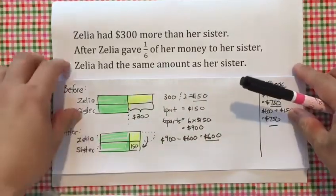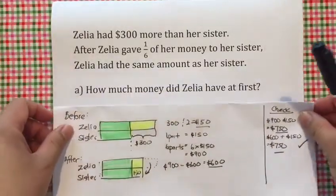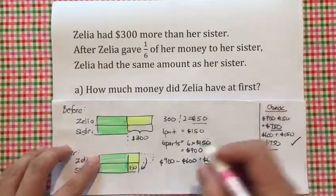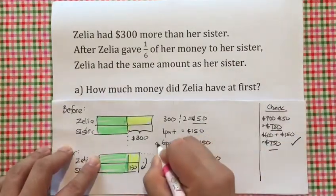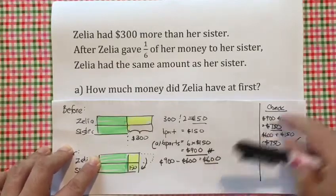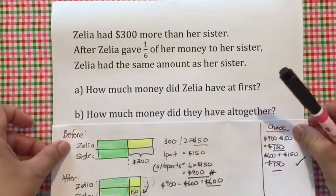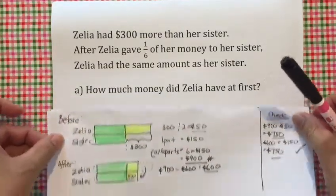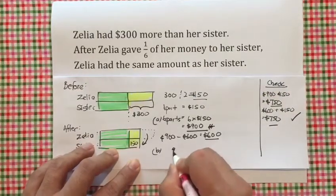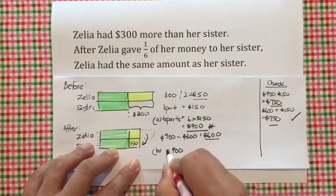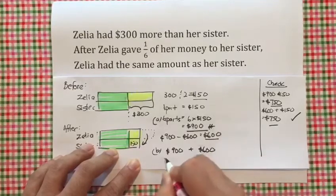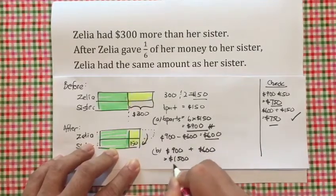Now, we are confident and we can look at the question. It says: how much money did Zelia have at first? Well, we got it — this is the amount she had at first, Part A. This will be our answer. And the next part: how much money did they have altogether? Altogether would be very simply Zelia's amount of money plus what sister had at first, which is equivalent to $1,500.